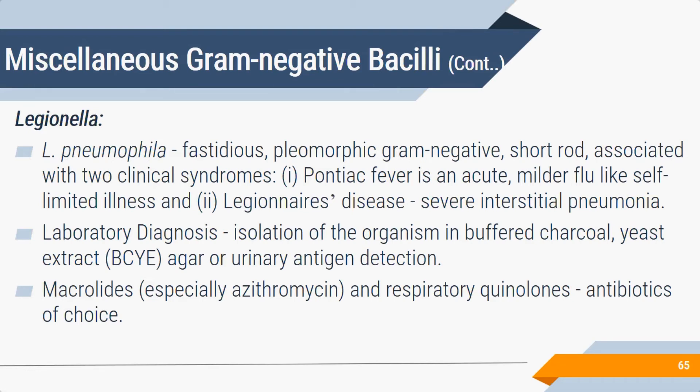Legionella pneumophila is a fastidious gram-negative short rod associated with two diseases: a milder flu-like illness called Pontiac fever, and a severe atypical/interstitial pneumonia known as Legionnaires' disease. It grows on a selective medium — BCYE (buffered charcoal yeast extract) agar — which is a frequently asked short question. Rapid antigen detection in urine is also available. It is sensitive to macrolides; azithromycin is the antibiotic of choice. Legionella thrives in collected water systems such as air conditioners and water coolers.